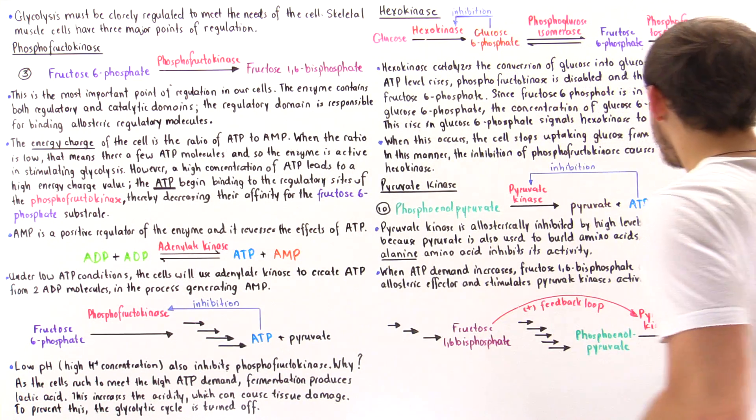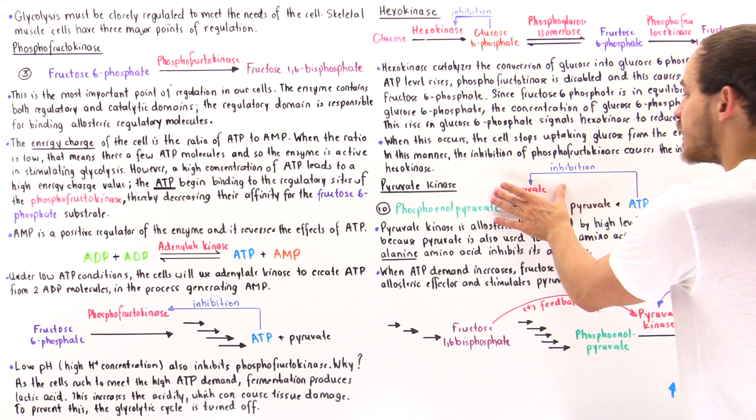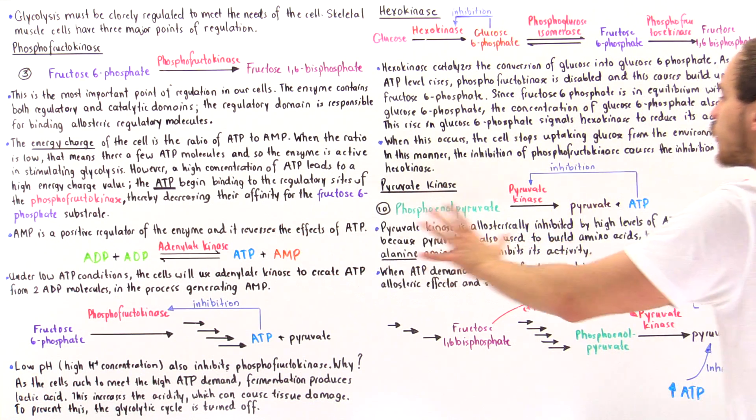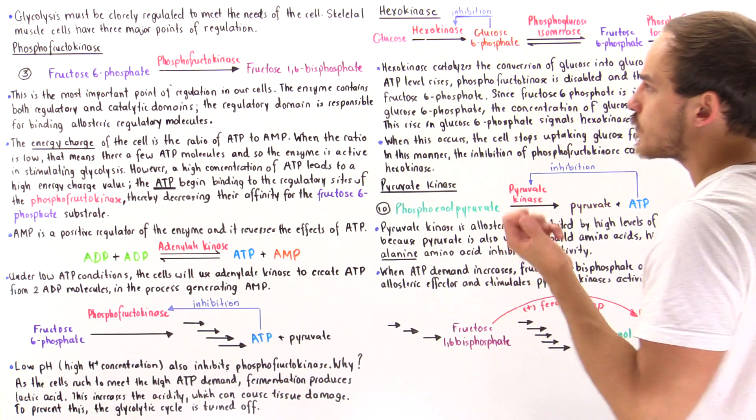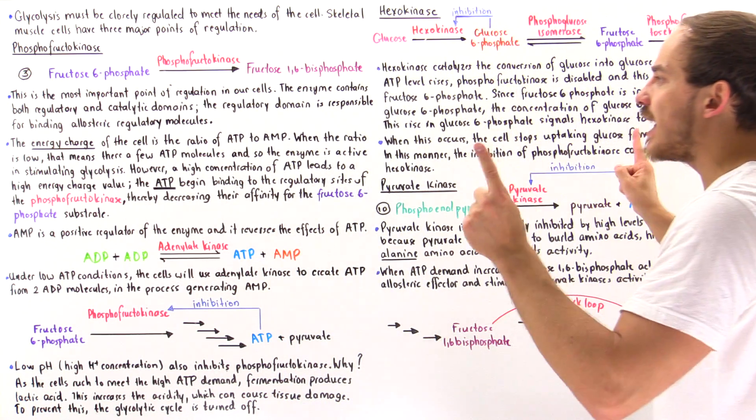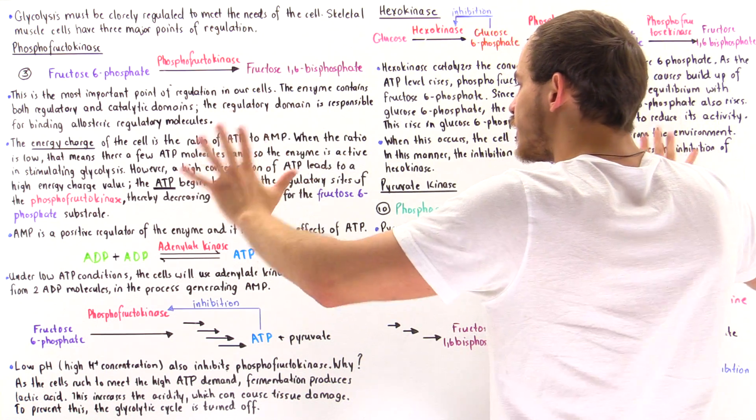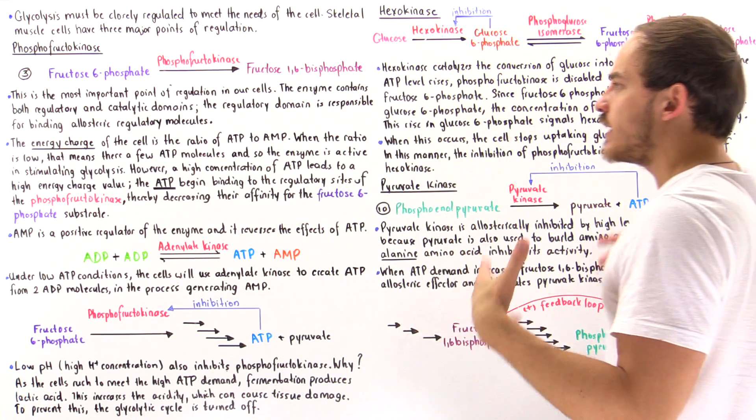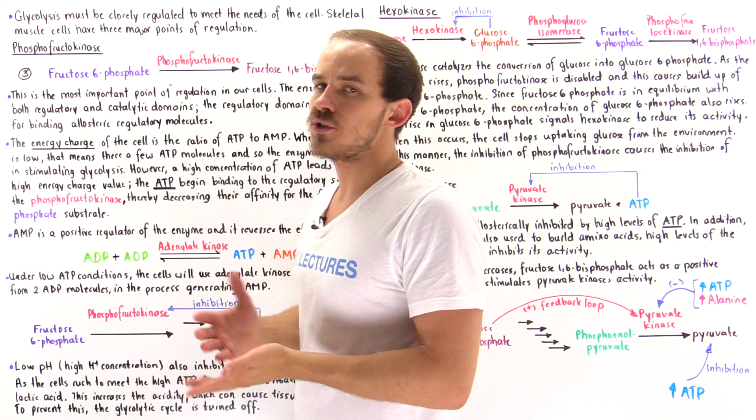On top of that, the ATP will also bind onto pyruvate kinase and inhibit the third irreversible process of glycolysis. And so when we have high amounts of ATP, all three irreversible processes are inhibited and glycolysis stops producing ATP.